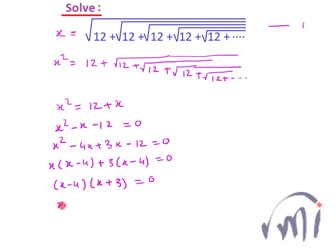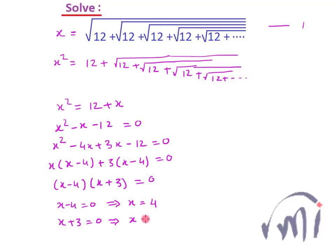So from here, either x minus 4 is equal to zero, or x plus 3 is equal to zero. If x minus 4 equals zero, then x equals 4. If x plus 3 equals zero, then x equals minus 3. So these two are the solutions for x.